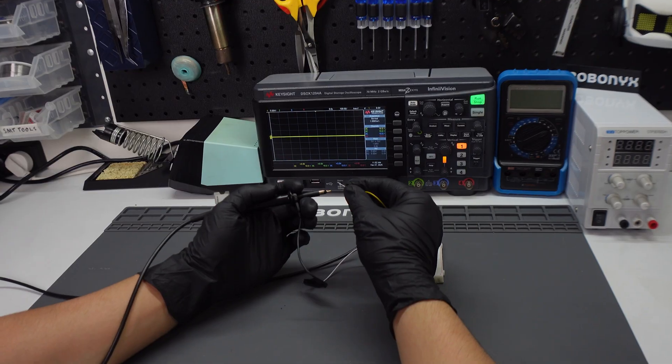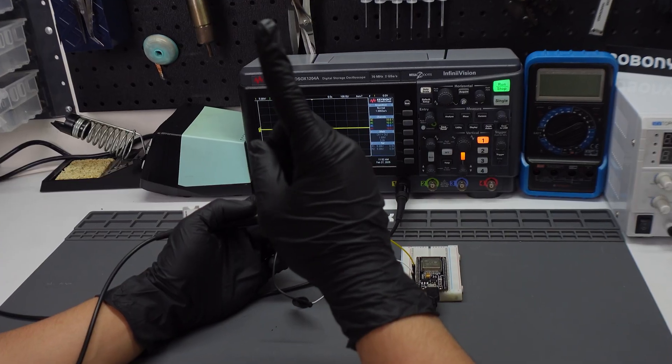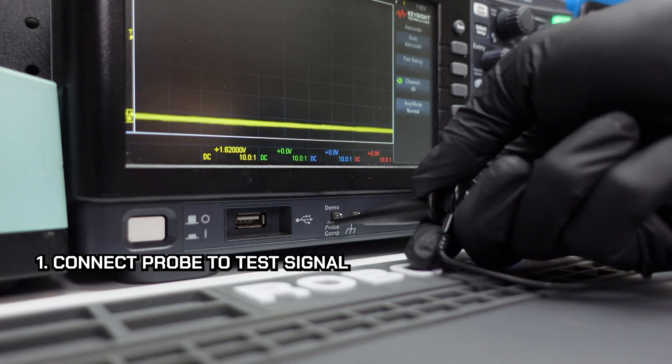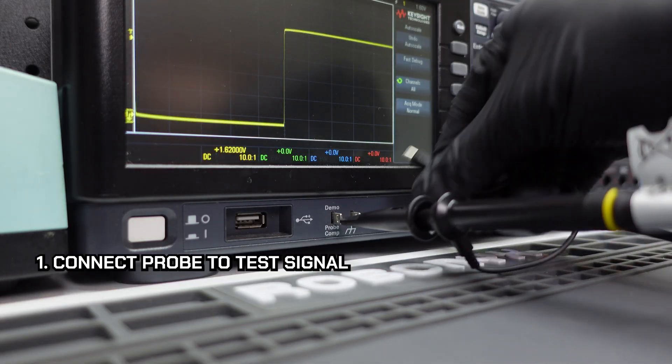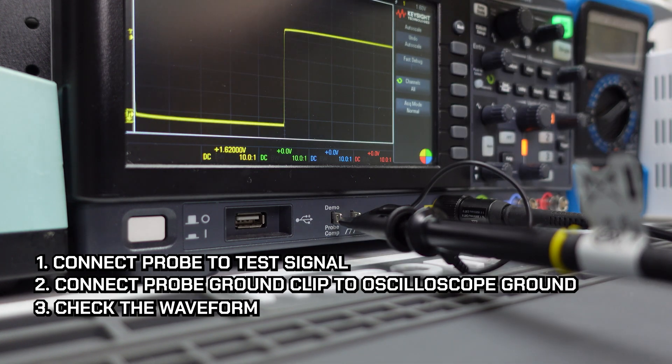First thing is you want to calibrate your probe. Before you do anything, you must compensate your probe. Otherwise, your readings could be completely wrong. So connect the probe to the oscilloscope's built-in test signal, then attach the probe ground clip to the oscilloscope ground, and then check the waveform.